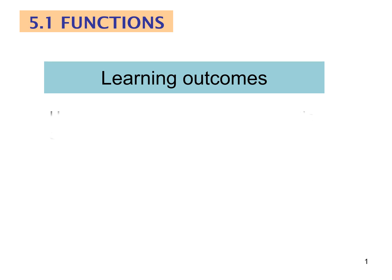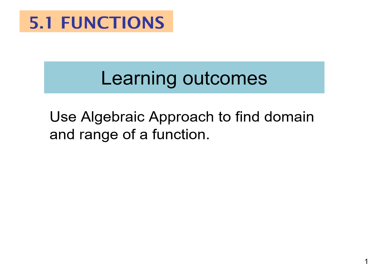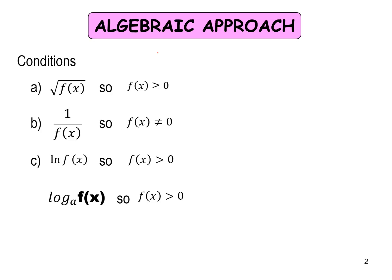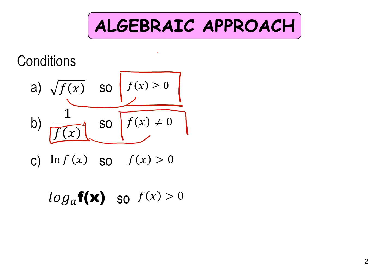5.1 Functions. Learning outcomes for today: use an algebraic approach to find domain and range of a function. For algebraic approach, these conditions must be considered: (a) for a square root function, f(x) must always be greater than or equal to zero; (b) for one over f(x), or any rational function, the denominator f(x) cannot equal zero; (c) for log f(x) or log base a of f(x), f(x) must be greater than zero.